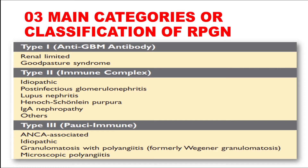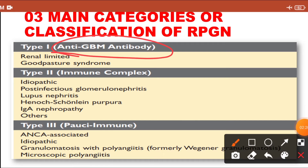The first category is type 1, anti-GBM antibody. In this variety there is formation of antibody against the glomerular basement membrane. Anti-GBM antibody is present, making this an antibody-induced glomerulonephritis. The classical example is Goodpasture syndrome. So type 1 category includes anti-GBM antibody induced RPGN.